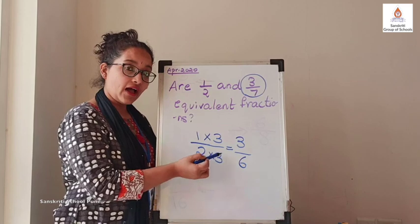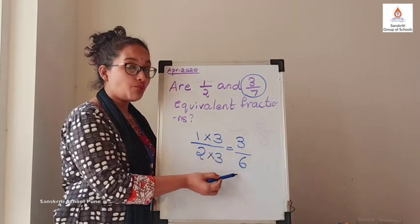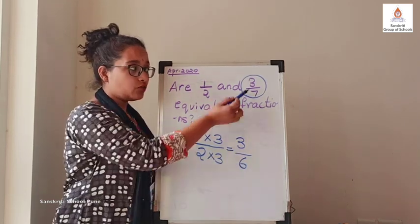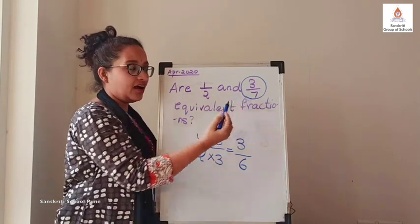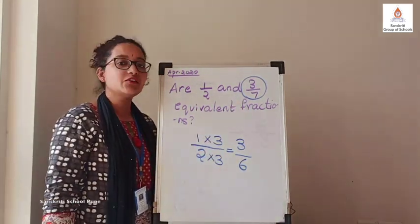So when you do that, you get 3 upon 6, not 3 upon 7. That is why they are not equivalent fraction.